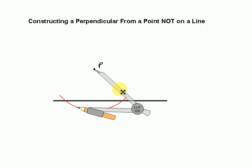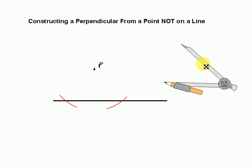Now we've got those two tick marks. Just like we did for constructing a perpendicular bisector, we want to follow that same procedure.